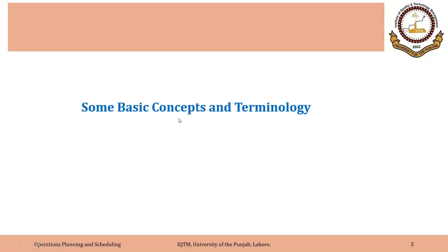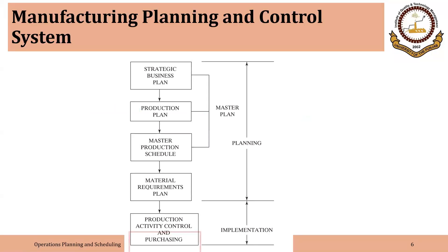Some of the terminology we will be discussing is the same as in the last three lectures and some concepts will be new. This is the basic hierarchy discussed in this course, especially in modules 2 and 3. First, there is a production plan or annual plan broken down into quarterly or monthly plan. Based on that master production schedule, we calculate the requirements for materials and components — that is the material requirements plan. Then we execute the plan, which is called production activity control or shop floor control.